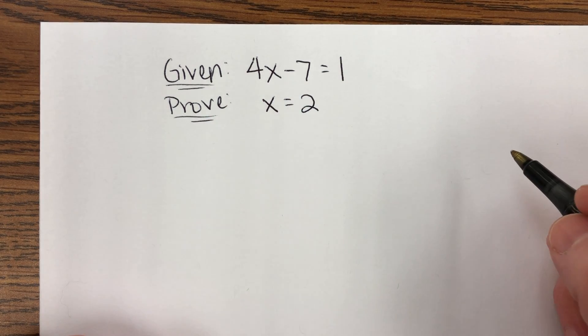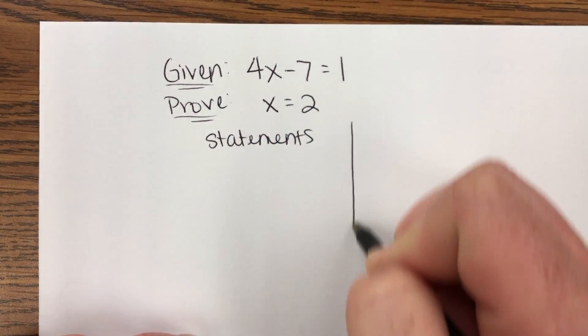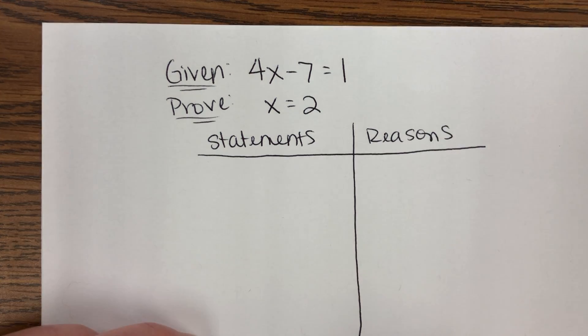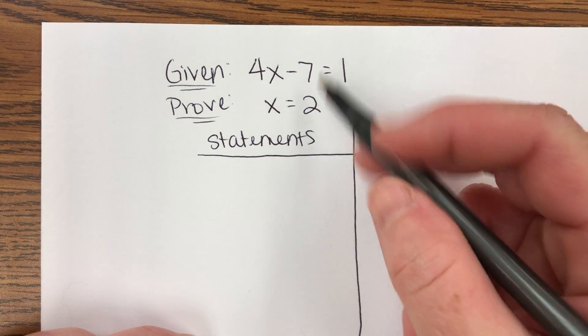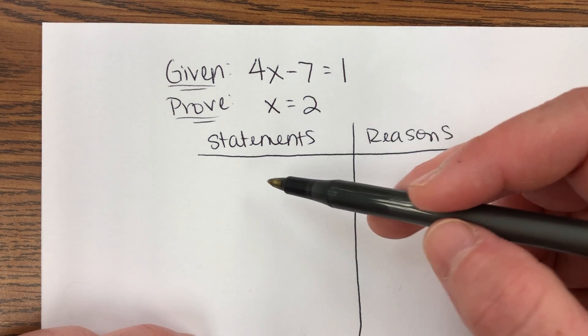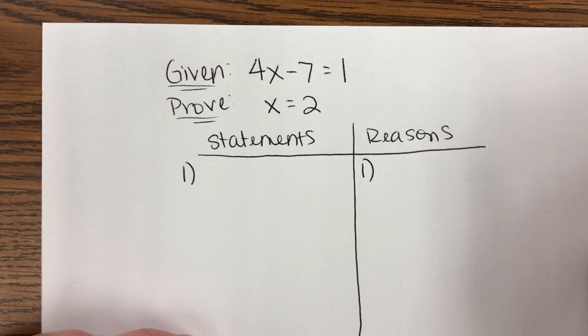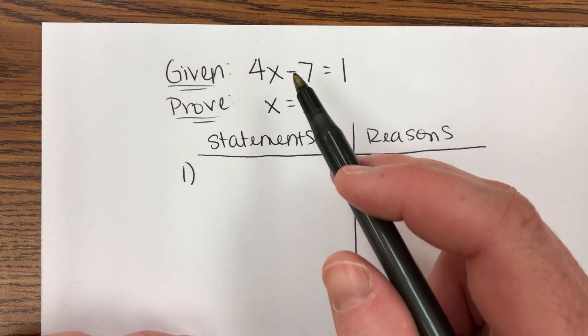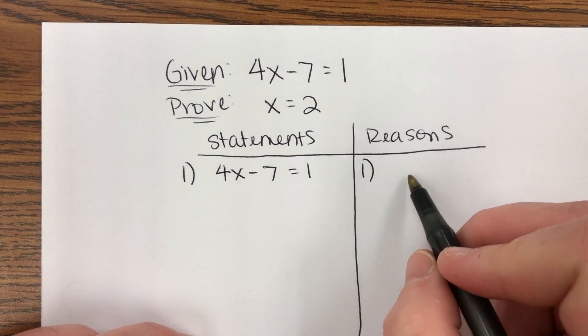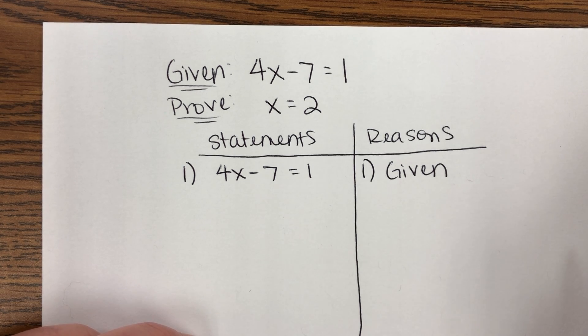So when I set up my two-column proof, I'm going to write statements in the left-hand column and it's going to look like a big T-chart and reasons in the right-hand column. Statements are just our steps. When we solve in math, all those steps go over here under statements. Reasons are the rules that we use in math why we do each step. Step one, we don't know where to start. Whenever we create a proof, you always start with the given. So the given statement is 4x minus 7 equals 1. And what's our reason for using that? Because that's what was given to us. So number one is always the given.